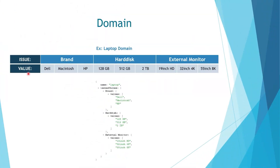A domain consists of issues and their values, which are used in a negotiation session. One of the defined domains in the Genius Web platform is the laptop domain. The laptop domain contains three issues: brand, hard disk, and external monitor. For the brand issue there are three possible values: Dell, Macintosh, and HP. Different possible values are also defined for the other issues. You can see the JSON format of the domain defined on the Genius Web platform.